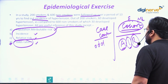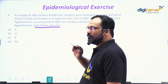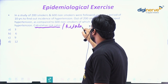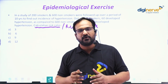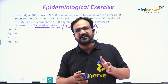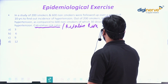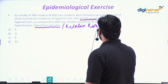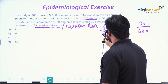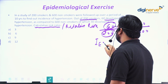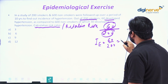But in a similar question, if they ask you to calculate something — for example, in the same question they ask you to calculate the risk ratio — risk ratio means they are asking to calculate the relative risk. Relative risk means how many times a person exposed has a chance of developing the disease compared to the non-exposed. From 200 smokers, 60 developed the disease, while out of 600 non-smokers only 30 developed the disease. So the incidence among exposed is 60 divided by 200.